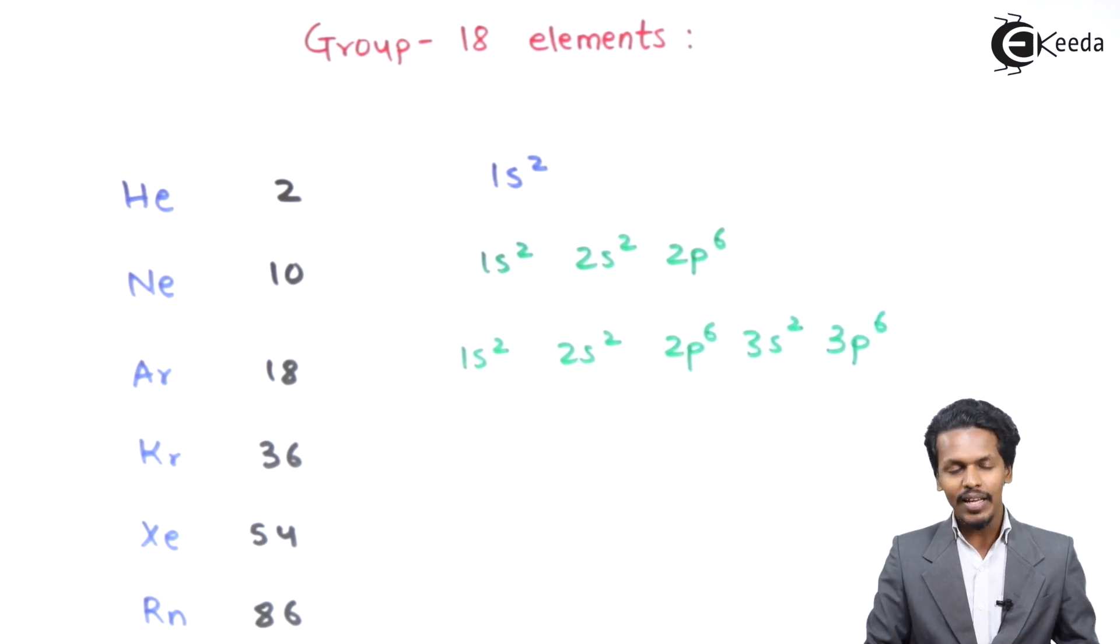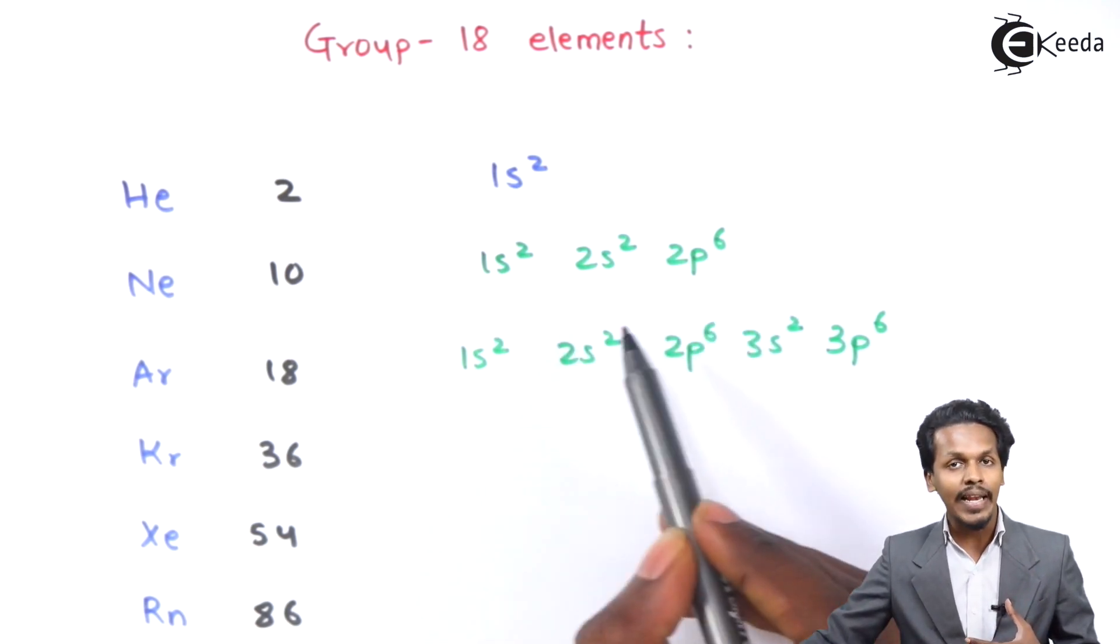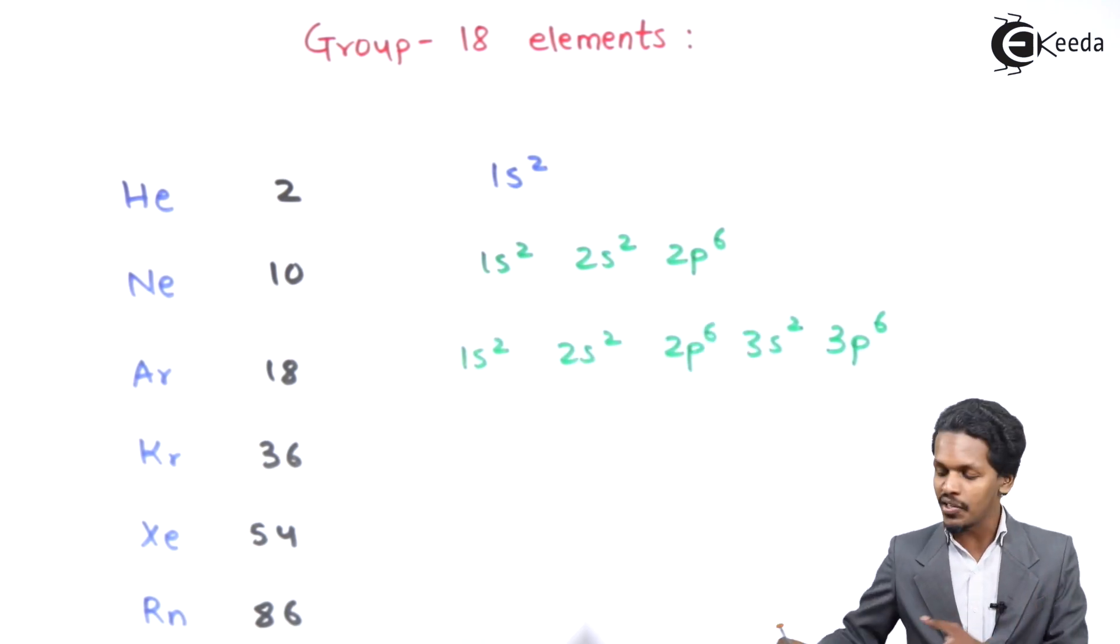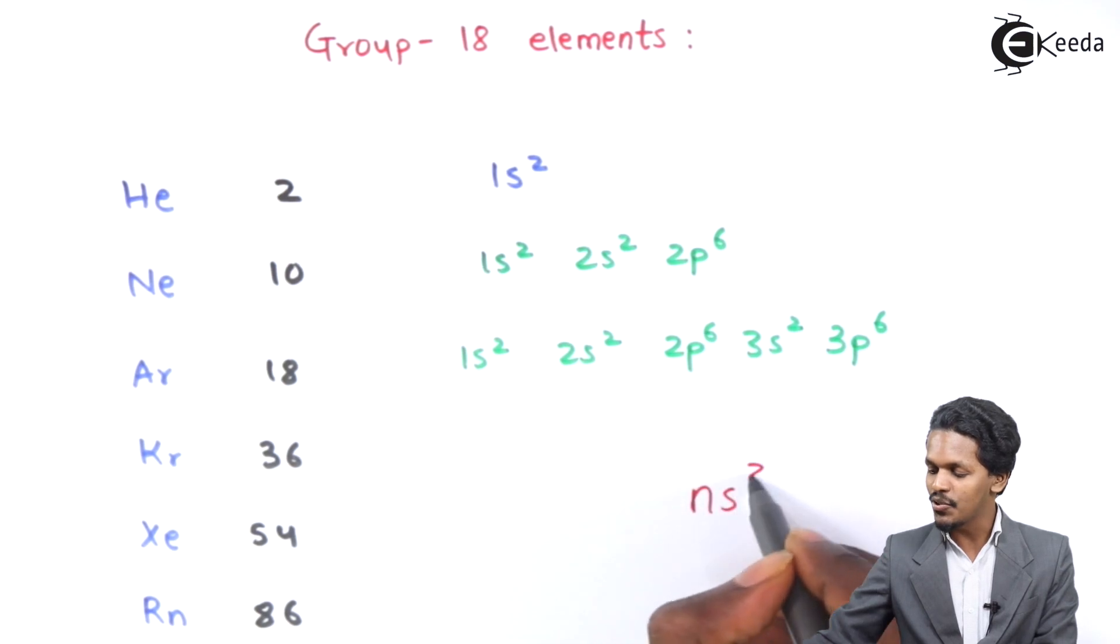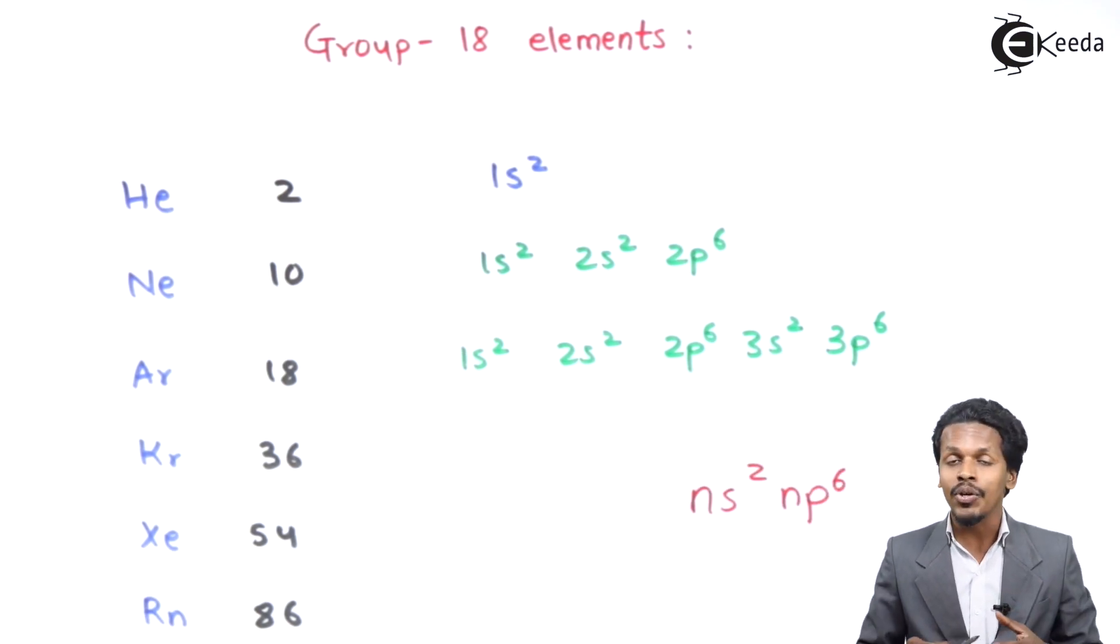So generally, we could find that as the number of shells increases, the valence shell has a general electronic configuration, that is ns2 np6. So this is the general electronic configuration of the valence shell of Group 18 elements.